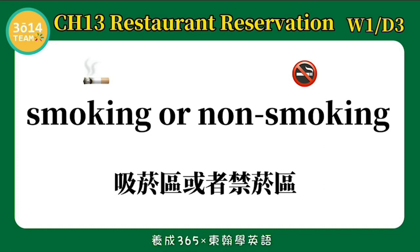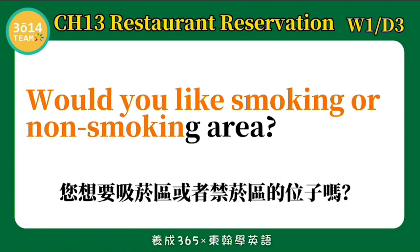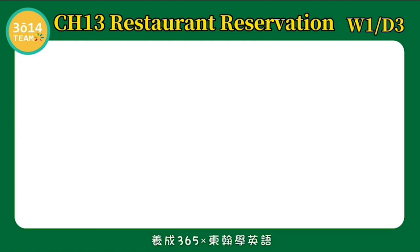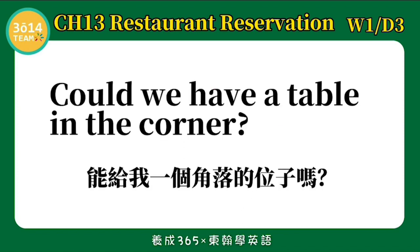Smoking or non-smoking. 吸煙區或者禁煙區. SM 我們發 Smoking. Would you like smoking or non-smoking area? 您想要吸煙區或者禁煙區的位子嗎? 跟著我念一次 Would you like smoking or non-smoking area? In the corner 角落. C-O-R 念 core, N-E-R 念 ner, Corner. In the corner. Could we have a table in the corner?